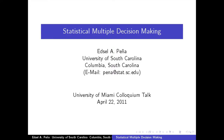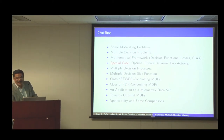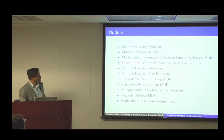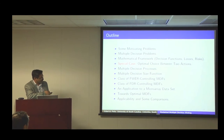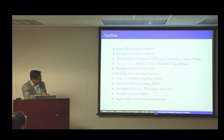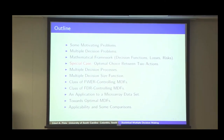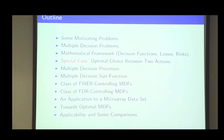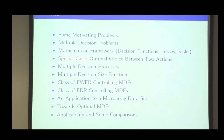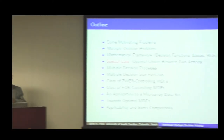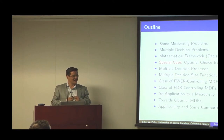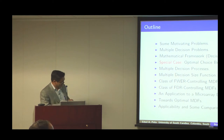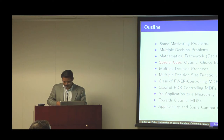My talk is really about decision-making, in particular about multiple decision-making. The outline is: I'll start with some motivating problems, then the problem of multiple decision-making with mathematical formulation. The key emphasis is that when you are trying to make many multiple decisions — like when dealing with high-dimensional data — you need to be very careful. If you are not careful, you don't have control over the errors. I'd also like to show some kind of economic aspect to the problem of multiple decision-making.